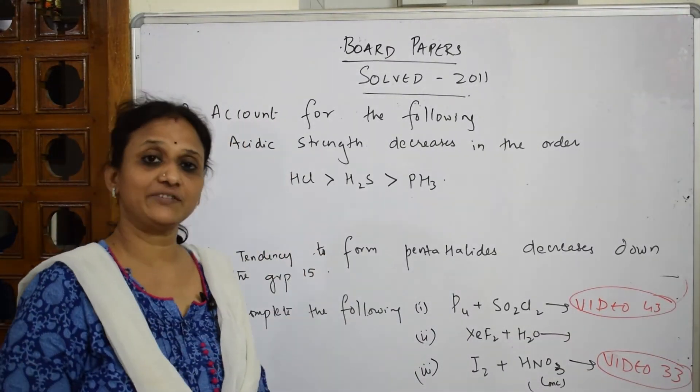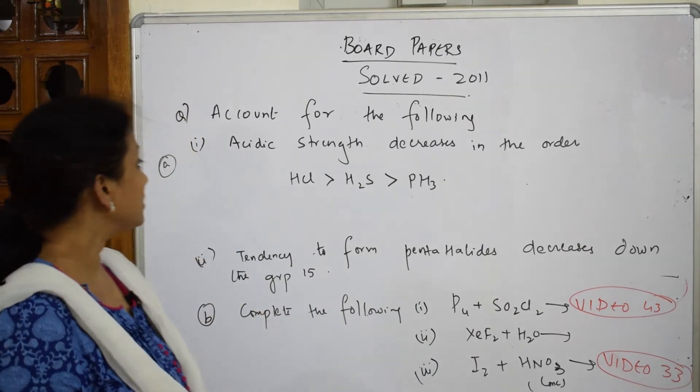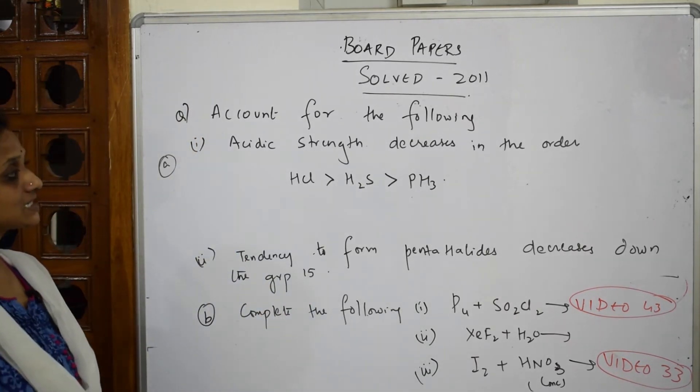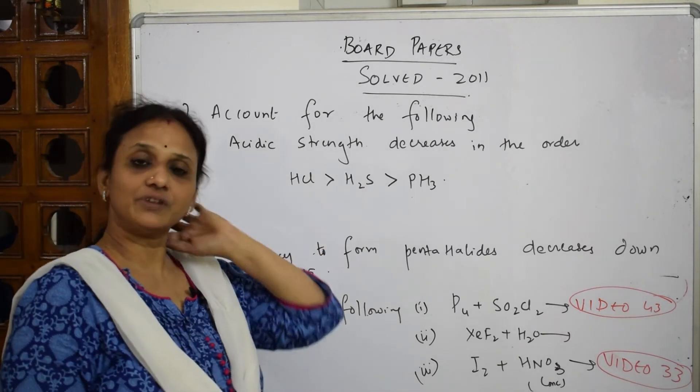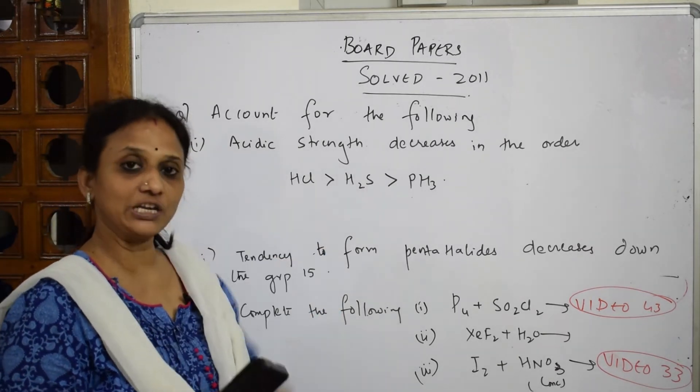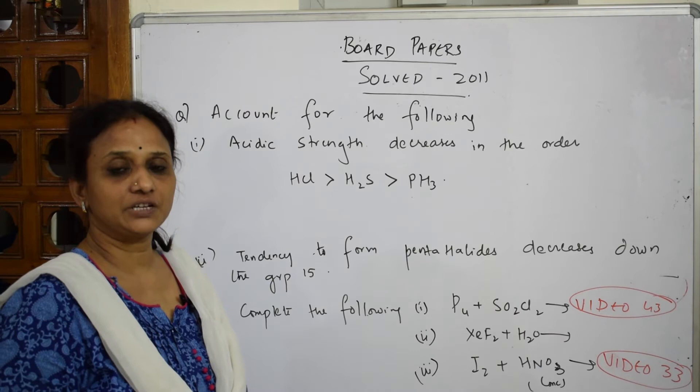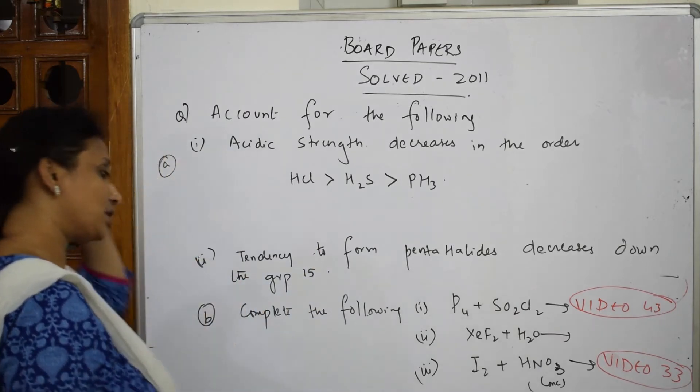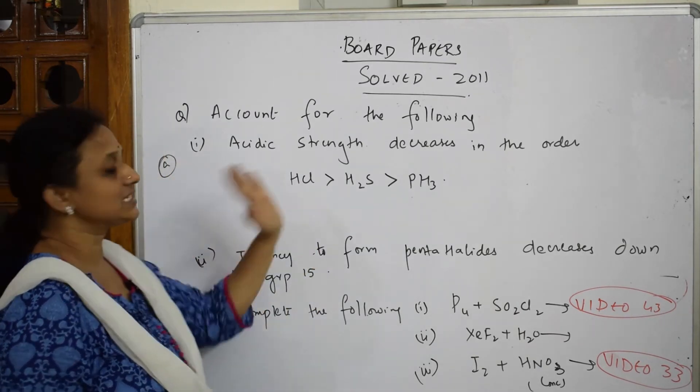What do they give us? Account for the following: acidic strength decreases in the order H3PO4, H2SO4, HCl. I have done one video where I explained acidic strength, boiling point, and reducing character. Let's see how to write this answer. They've given acidic strength - that means release of H+ ions.